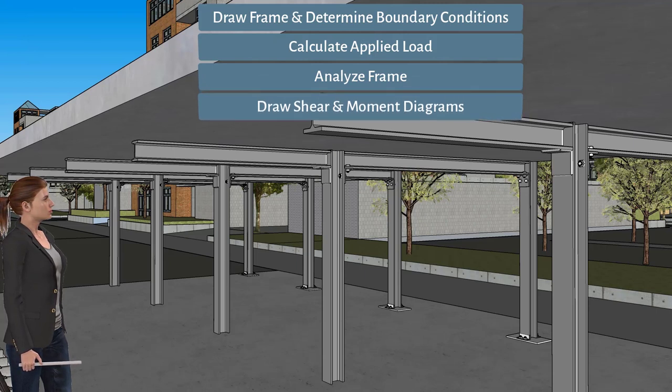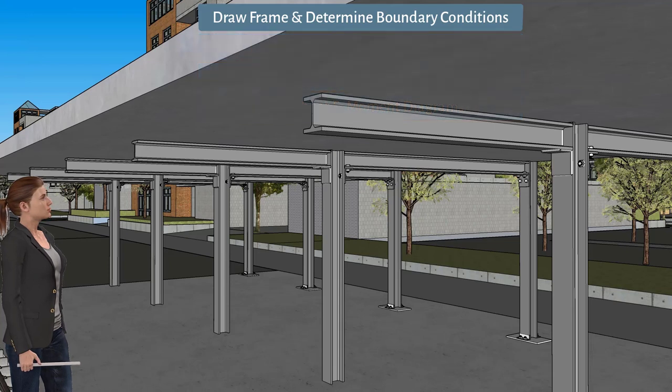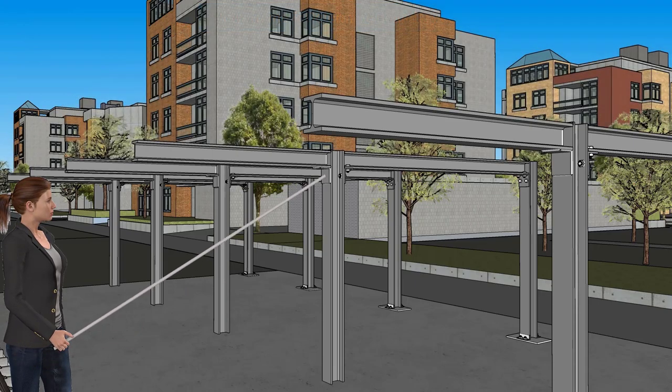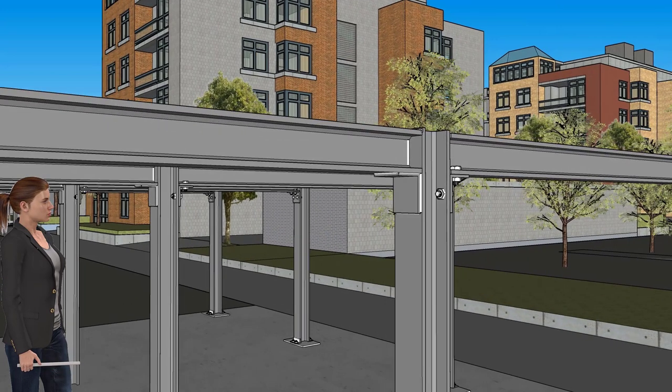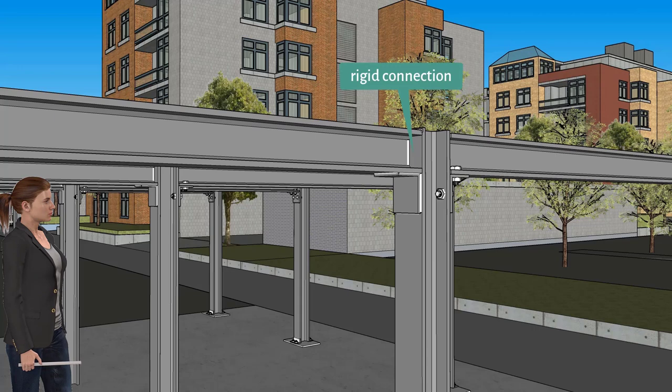Let's start by identifying the frame's boundary conditions. That is, let's label the connection types of the joints of the structure. This steel joint is made by welding the overhang beam to an angle which is also welded to the column. We consider this a rigid connection, meaning that the beam cannot rotate relative to the column. If the joint rotates, both the beam and the column rotate together.